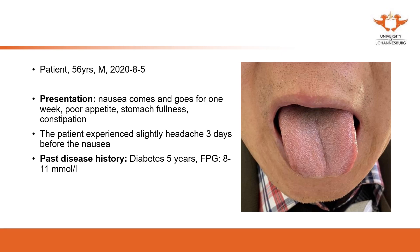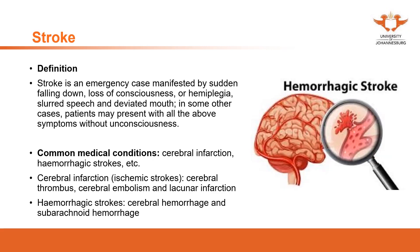This was a real stroke clinical case. When we talk about stroke — what is stroke? The term stroke in traditional Chinese medicine is used as a disease name. In conventional medicine they also use stroke, but it refers to a broader sense, a group of diseases. From Chinese medicine, it is an emergency case. The manifestations include: sudden falling down, loss of consciousness, hemiplegia, slurred speech. Sometimes the patient may present with these symptoms without unconsciousness.